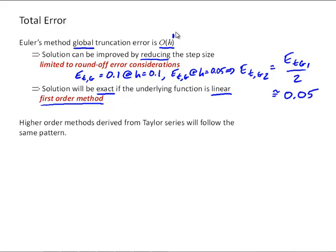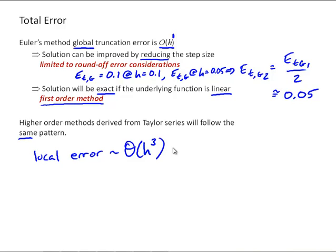This is a method derived from the Taylor series, and higher-order methods derived from the Taylor series follow the same pattern. For example, if we developed a numerical method that included the second-derivative term in the Taylor series, the local truncation error would be order h cubed and the global error would be order h squared.